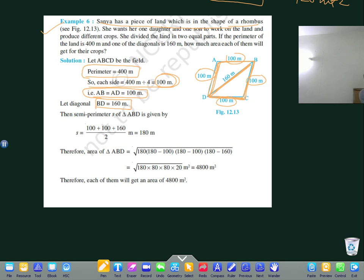So we have to find what is the area that son and daughter get. What is the semi-perimeter of triangle ABD? 100 plus 100 plus 160 divided by 2 equals 180. And you know Heron's formula.